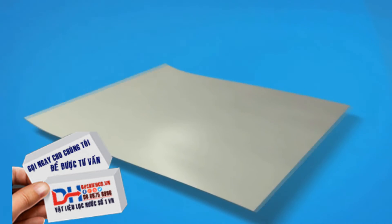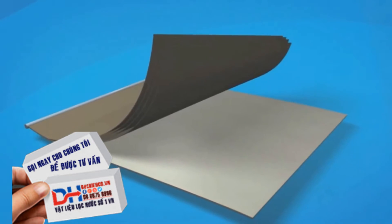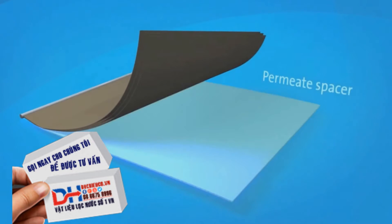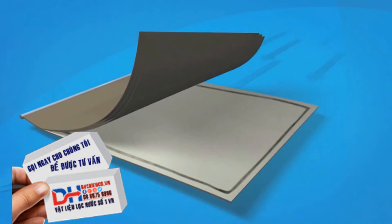A sheet of permeate spacer is added to the membrane sheets and feed channel spacer. This enables the final recycled water product, or permeate, to flow evenly across the entire membrane surface, even under high pressure.